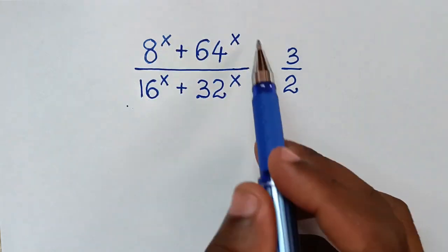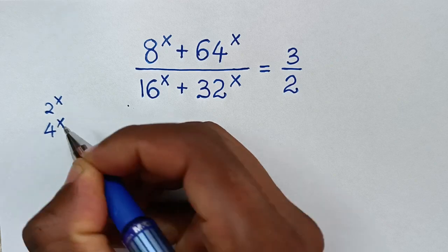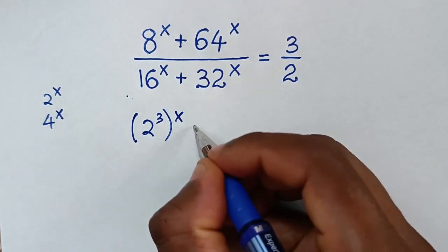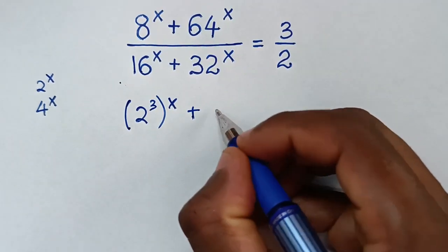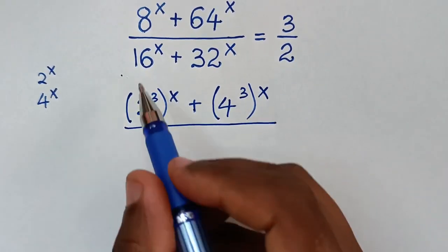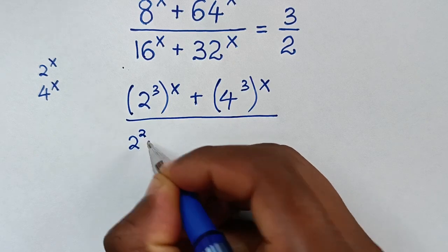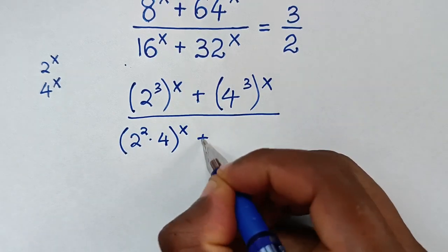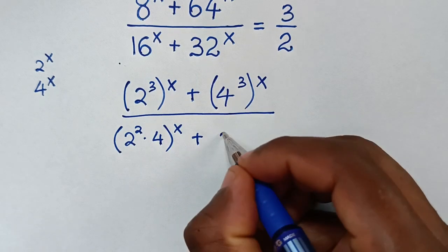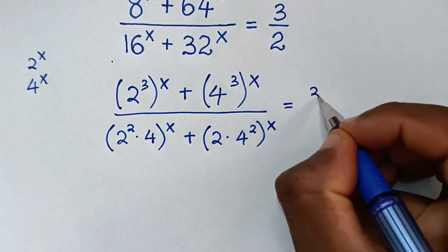In the first step, we rewrite the left side exponents in terms of 2^x and 4^x. So 8^x becomes (2^3)^x, plus 64^x becomes (4^3)^x, over 16^x which is (2^2 · 4)^x, plus 32^x which is (2 · 16)^x, equal to 3/2.